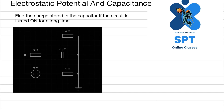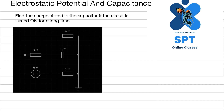We know that if you connect a capacitor in a DC circuit, after some time the current won't flow through it. The reason is that the potential across the capacitor equals the voltage difference across the source. Here we have other resistors too, so we can't directly say the voltage across the capacitor equals the source voltage. We need to figure out the voltage across the capacitor, and then we can get the charge stored in it.